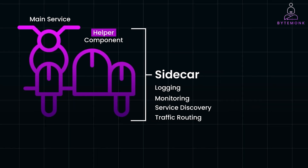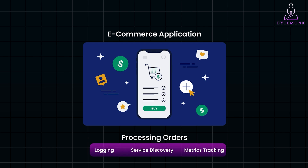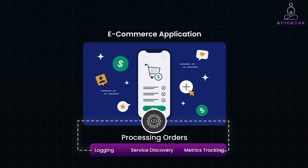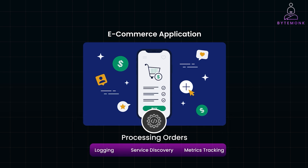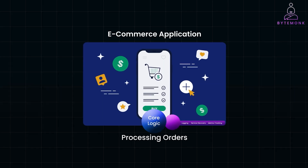Imagine you have a microservice responsible for processing orders in an e-commerce application. This service needs features like logging, service discovery, and metrics tracking. Traditionally, you might add these features directly into the service code, but this creates complexity and mixes business logic with infrastructure concerns. With the sidecar pattern, you offload these tasks to a separate component running as a sidecar container or process. The order processing service can now focus purely on its core logic — handling orders — while the sidecar handles the rest.